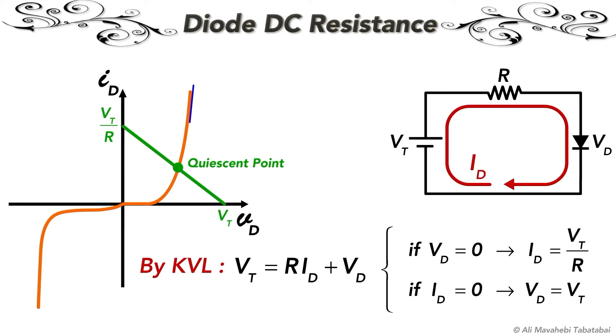So by applying a constant or DC voltage, we can bias the diode or move the quiescent point to the desired location.